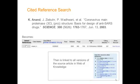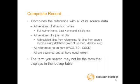Each database may treat the article's data slightly differently, resulting in variations in author name, source title, or others. The composite record is a combination of all of these data points into one searchable record. This is the information that is utilized when you perform a cited reference search.